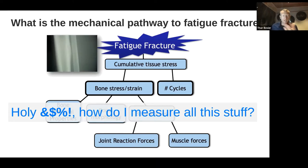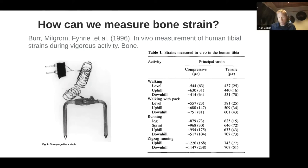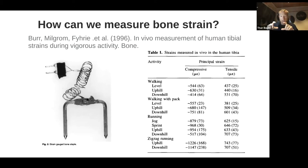How is it measured? This is some pioneering work from Dave Burr in the 90s. He teamed up with a researcher called Milgram who pioneered this method — a staple that gets implanted into your bone. If you're lucky enough to be enrolled in this study, you get a staple banged directly into the cortex of your tibia, and embedded in the staple are some strain gauges.